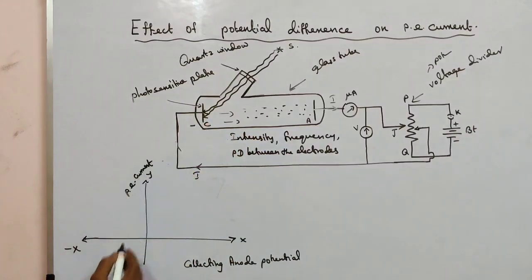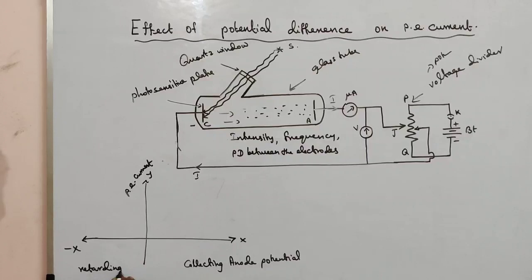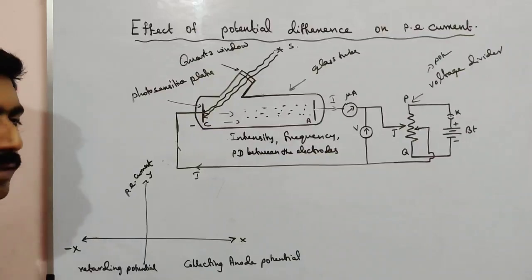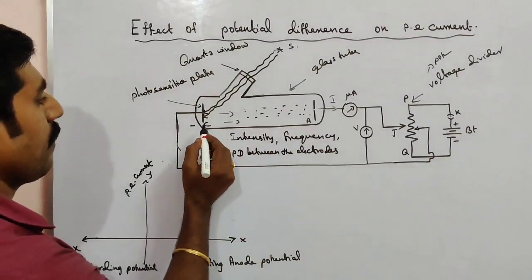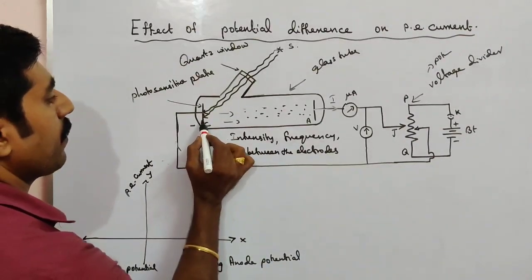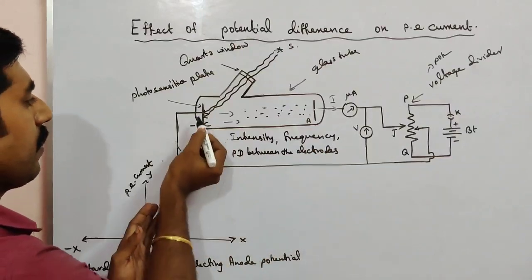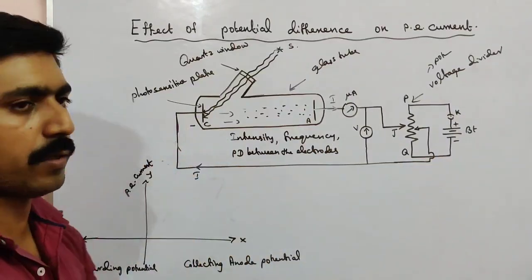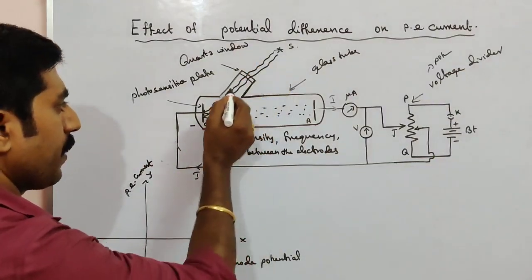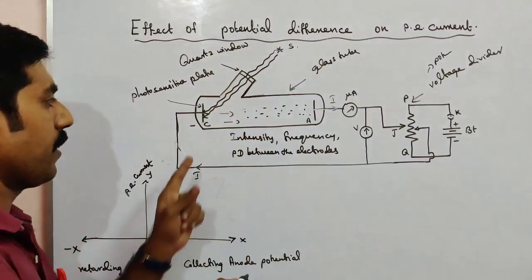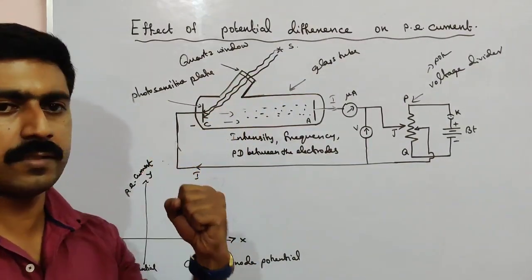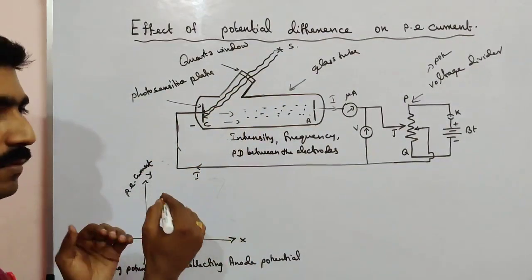The negative x-axis represents negative potential. The retarding potential is nothing but the negative potential. So this side is negative and this side is positive. With cathode having negative potential, we have a negative term. We have the radiation — the intensity of radiation remains the same.